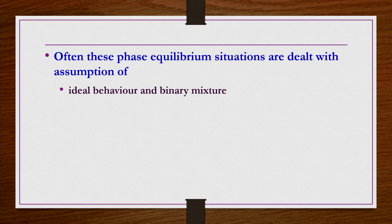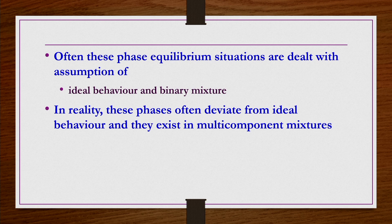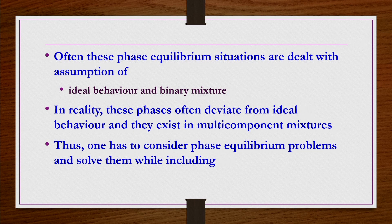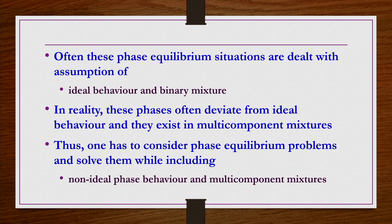Often these phase equilibrium situations are dealt with under the assumption that the phases are ideal and the mixture is a binary mixture. However, in general, these phases deviate from ideality, displaying higher levels of non-ideality in many applications, and there exist more than two components — the mixtures may be multi-component rather than simply binary. Therefore, one has to consider phase equilibrium problems including non-ideal phase behavior and multi-component mixtures.